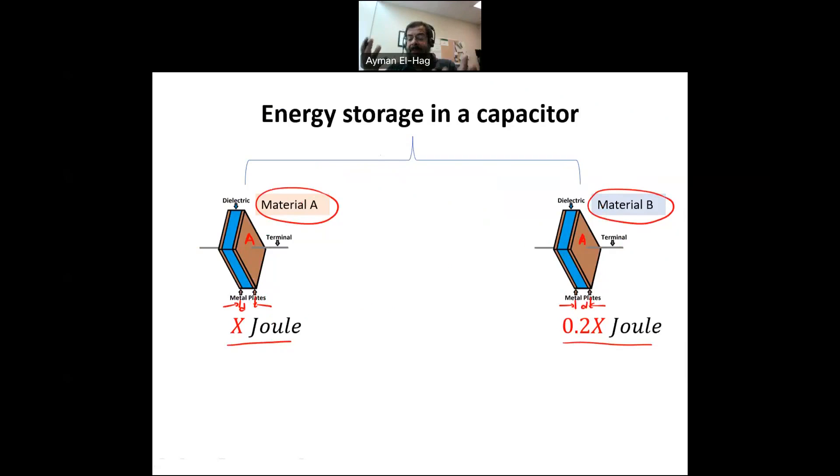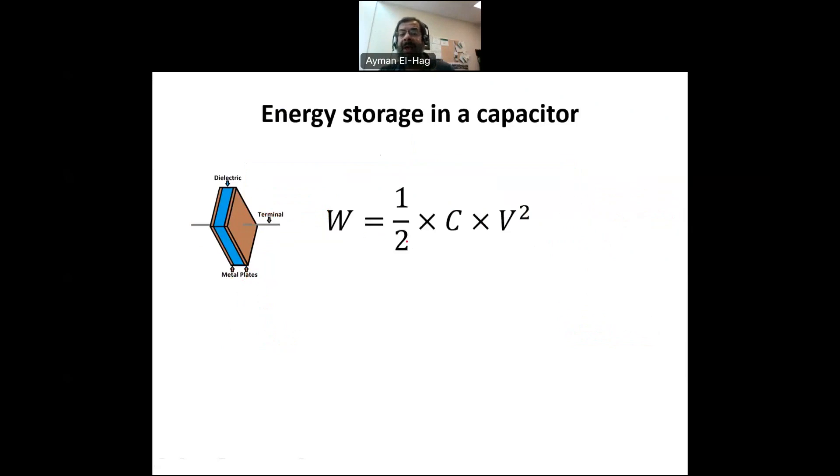To explain this, let's go to the fundamental formula that we use to describe the energy stored in a capacitor, which is one-half C, the capacitance, times V squared, the applied voltage. Now, as I just mentioned, the two capacitors, we apply exactly the same voltage. So, V cannot be the reason why we have discrepancy or difference in the energy storage.